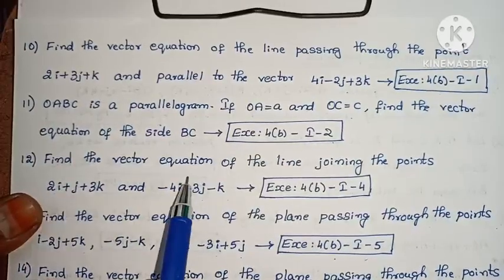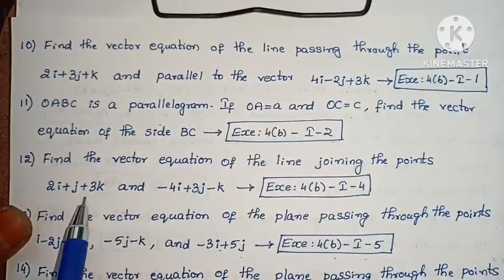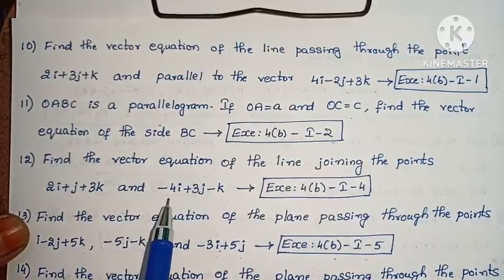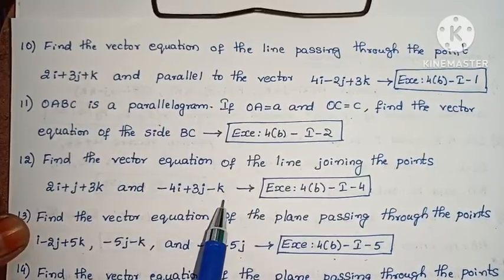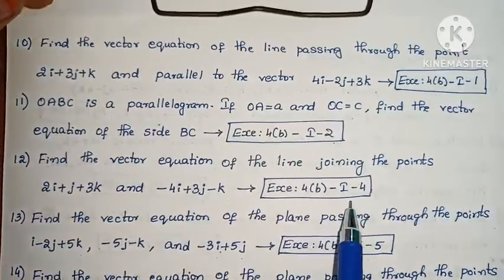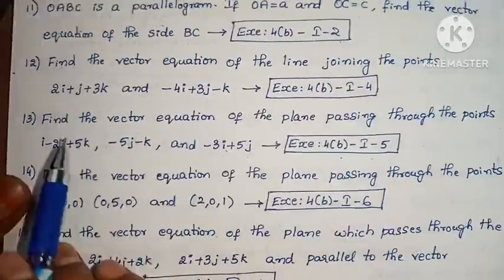Next: Find the vector equation of the line joining the points 2i + j + 3k and minus 4i + 3j minus k. Exercise 4B, problem 4.